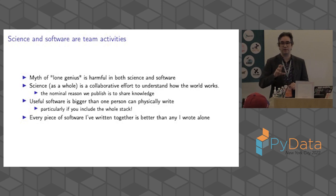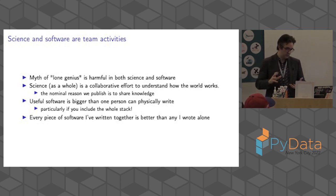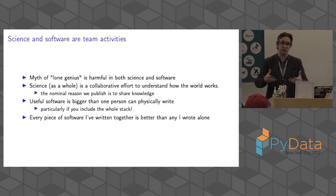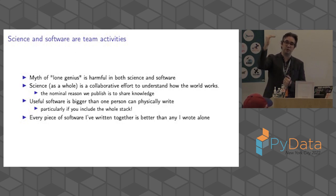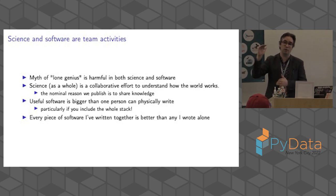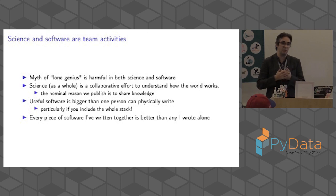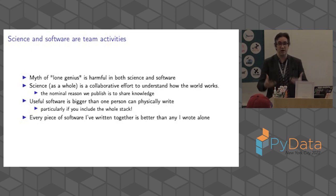Both science and software have this myth that a lone genius is the archetype that's going to work — one person alone can solve it. I think this is really harmful. To some degree, science as a whole is a collaborative effort to collectively understand the world. We don't publish solely to game h-indexes — we publish to share information so others can build on it. Similarly, any useful software these days is bigger than one person can physically write by themselves in their lifetime. If you think about the engineering effort from a Jupyter notebook running machine learning models all the way down to the Fortran and GPU code that runs it, that's a stupendous amount of work. Any software I've written in collaboration with someone else has been better than software I've written by myself.